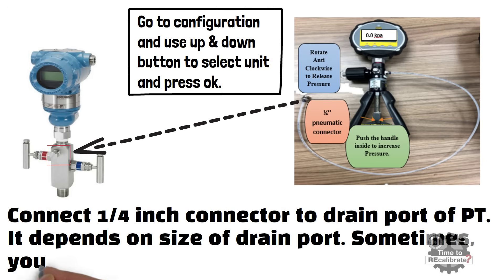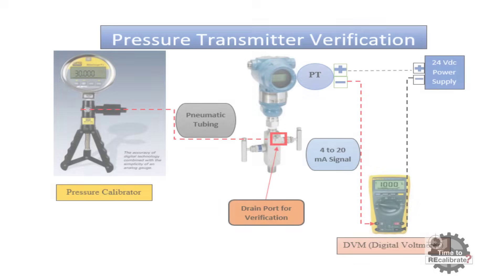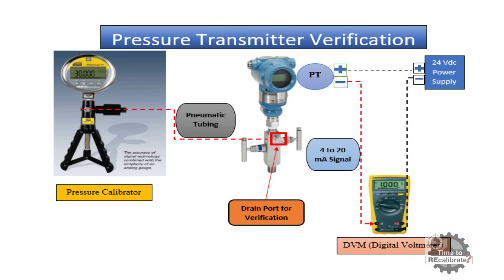Sometimes you may need a 1/2-inch connector. The negative terminal of the pressure transmitter gives a 4 to 20 milliampere analog output. So connect a digital multimeter in series with the pressure transmitter to measure the analog output. In other words, put the multimeter in milliampere measuring mode, and connect the red probe to the minus terminal of the pressure transmitter and connect the black probe to the negative terminal of the 24-volt DC supply. Everything is now set for verification of the pressure transmitter.